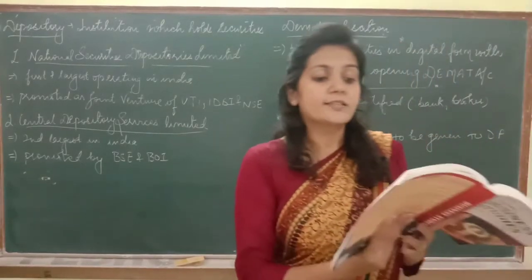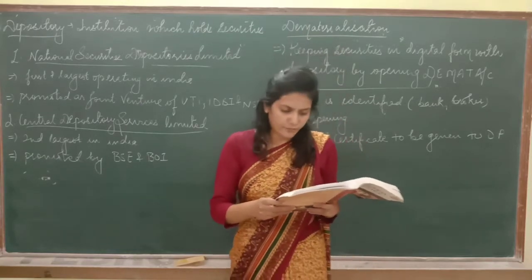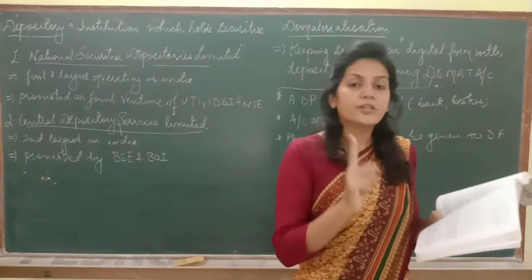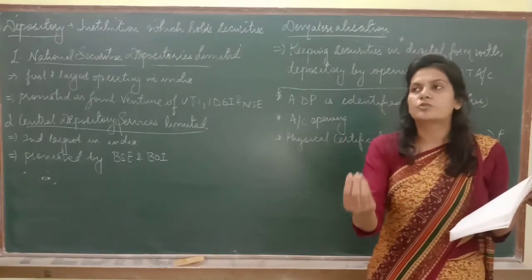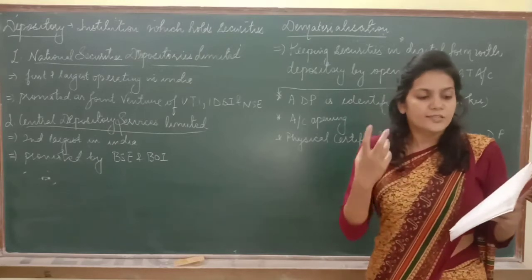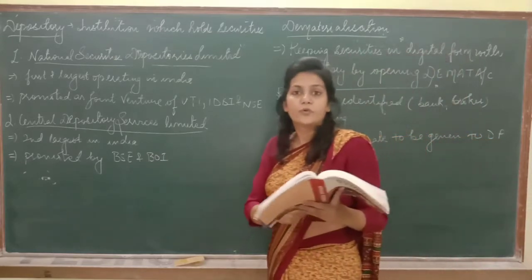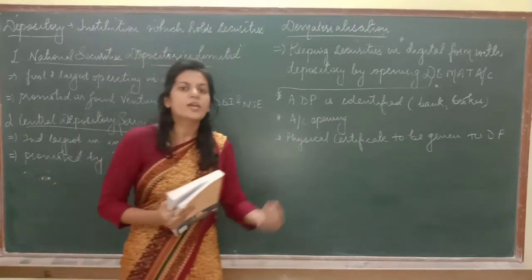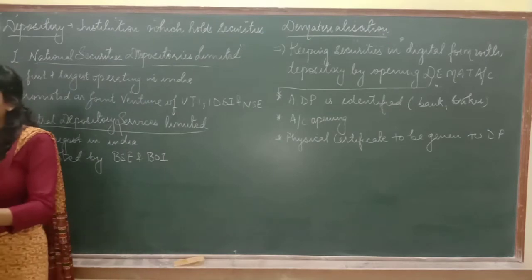If shares are applied in a public offer, simply the details of the depository participant and demat account are given, and shares on allotment will automatically be credited to the demat account. So if you're directly applying to buy freshly issued shares of a company, you give your demat account details and the allotted shares are directly credited to your demat account.